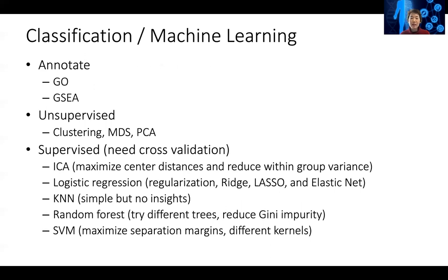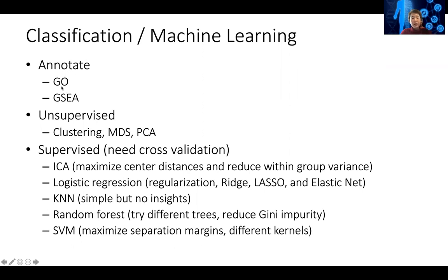For RNA-seq, you might also want to do classification. If you have many samples already profiled — some normal, some diseased — and a new sample, you want to determine whether it belongs to the normal or disease group. For example, lung cancer has adenocarcinoma and squamous lung carcinoma subtypes, both non-small cell lung cancer but with treatment differences. In this case you use classification: labeled samples are used to predict the class of unlabeled new samples — this is machine learning.